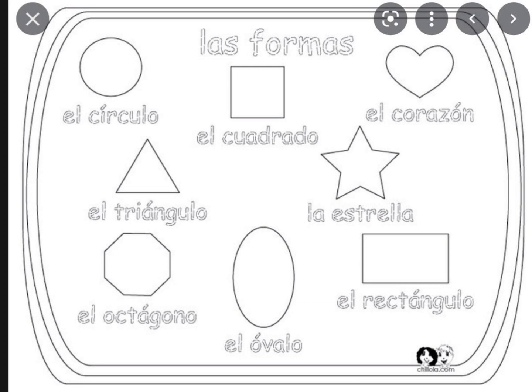So once again, we have círculo — circle. Cuadrado — square. Corazón — heart. Triángulo — triangle. Estrella — star. Octágono — octagon. Óvalo — oval. Rectángulo — rectangle.